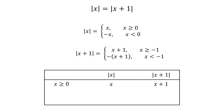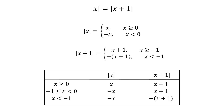First, x greater than or equal to 0, for which modulus of x equals x and modulus of x plus 1 equals x plus 1. Second, x greater than or equal to negative 1 and less than 0, for which modulus of x equals negative x and modulus of x plus 1 equals x plus 1. Third, x less than negative 1, for which modulus of x equals negative x and modulus of x plus 1 equals negative of x plus 1. Let's find the solution in each of these intervals.